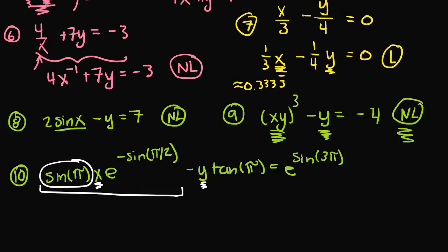Looking at the first term: sine of π is just a number, and it's multiplied by x. Then that's multiplied by e to the negative sine(π/2), which is also just a number. So this is just some number times x times some number — a coefficient times x. x is not raised to any other power except 1, not multiplied with any other variable, not involved in any trigonometric, logarithmic, or exponential function, not in the denominator, and not a root. So this first term is linear.